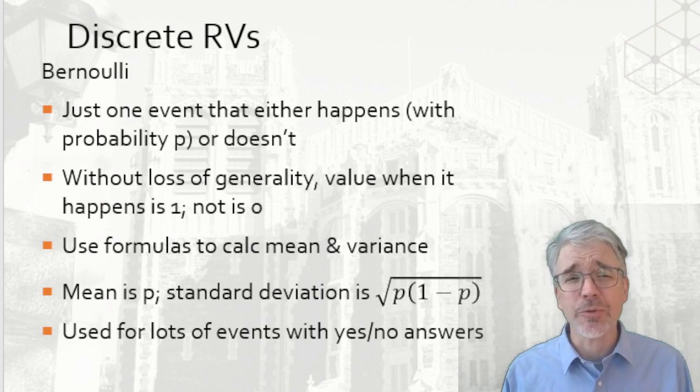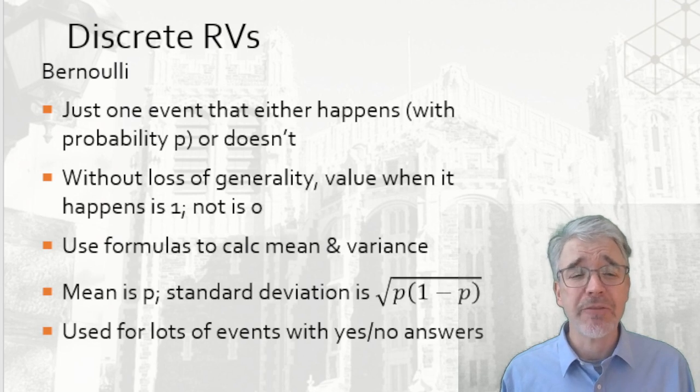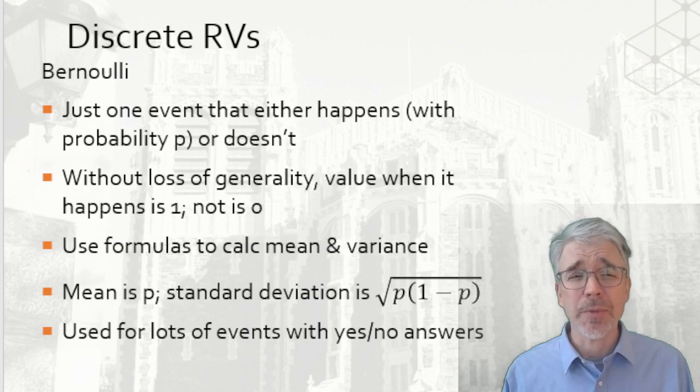These formulas we just reviewed calculate the mean and variance. And if we have multiple Bernoulli trials, then again use the formulas for linear combinations. If the probability of a single occurrence happening is p, then the mean is p and the standard deviation is the square root of p times one minus p.